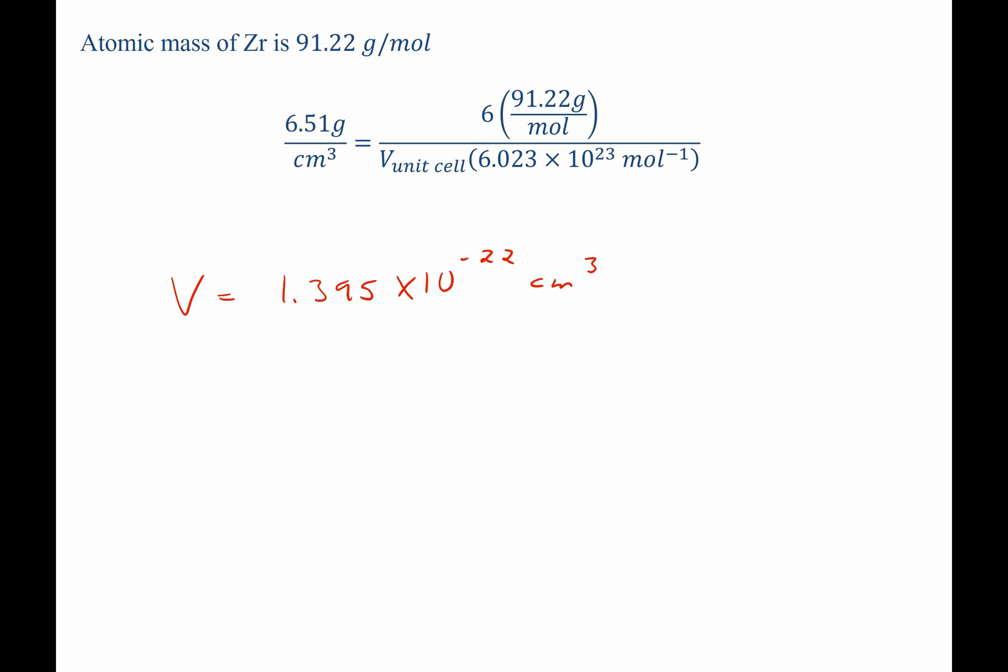However, the question specifically asks us to solve for this volume in cubic meters. So, we multiply it by a factor to relate the two. We remember that there are 100 centimeters in a meter. But we're talking about quantities cubed, so we need to cube the whole thing. And this gives us a volume of 1.395 times 10 to the negative 28th meters cubed.